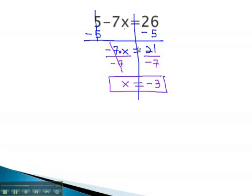Notice, negative 3 is the number that we could plug in for x to make this equation true. Negative 7 times negative 3 would be positive 21. 5 more is 26.